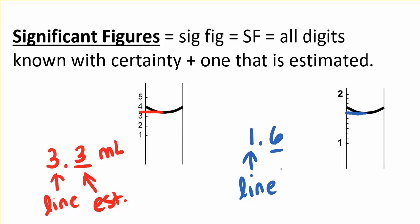So there's a line for that, and then we need to estimate one in between. We always estimate one digit. Since that appears to fall right on that little line, I'm going to estimate a zero here, and that completes my measurement.